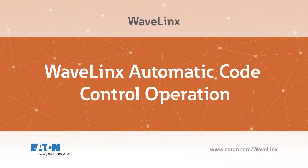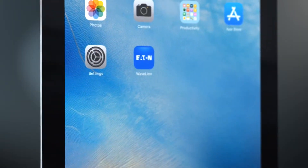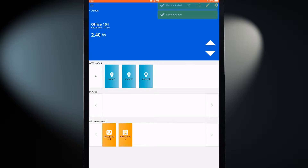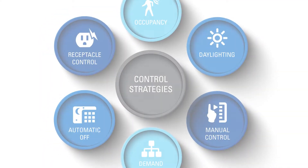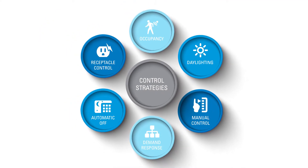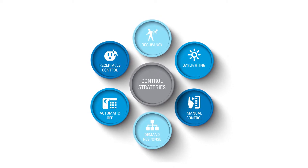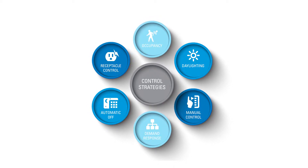This video explains the functionality of the Wavelinx Automatic Code Control sequence of operation. Once the Wavelinx mobile application has been used to assign devices to an area, the devices begin to operate automatically. The automatic code control sequence that Wavelinx uses meets or exceeds most energy code requirements and provides savings through energy-efficient control strategies.